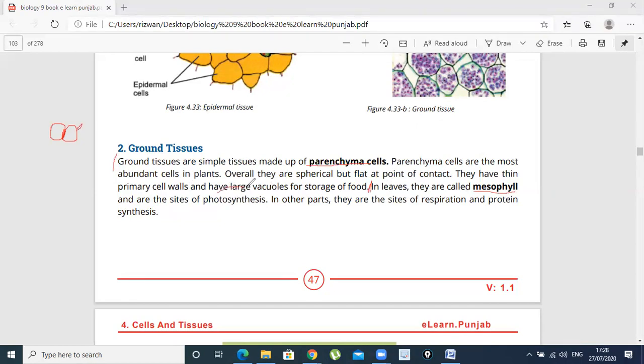And they have large vacuoles. When we talk about meristematic tissue, we said that the cells are not mature—they are constantly developing, so the nucleus is in the center and the vacuoles are either absent or small. But ground tissue cells have large vacuoles because they are mature cells.